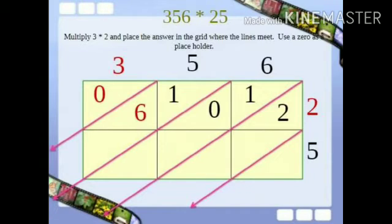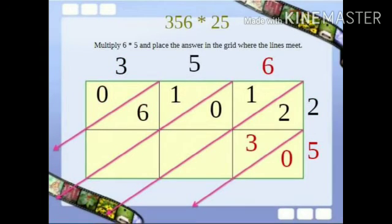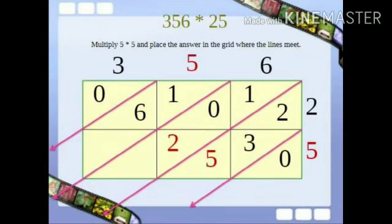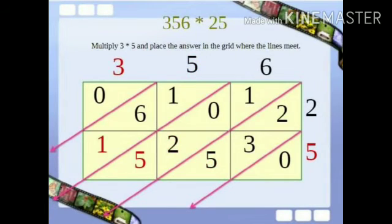Next move on to the second row. Now multiply 5 into 6. So 5 times 6 is equal to 30. So write 3 in the upper triangle and 0 in the lower triangle. Next multiply 5 into 5 and 5 into 3. Then fill the numbers in the triangle.